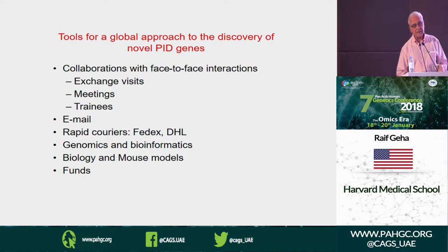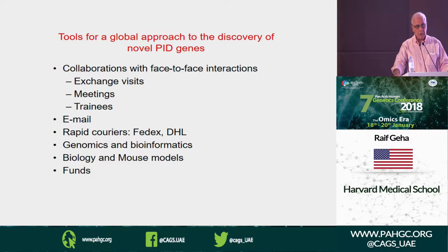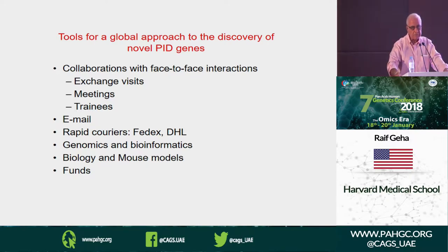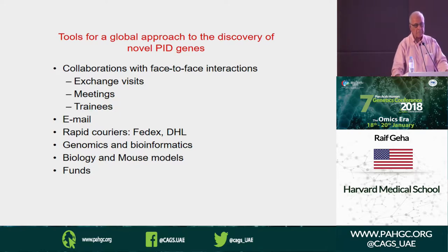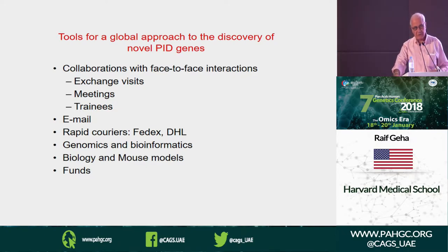This whole thing started about eight years ago. We had both a strength and a weakness at that time. The weakness was that I work in Boston. In Europe, there are guest workers from Algeria, Morocco, Turkey who intermarry with first cousins, making gene discovery easier for European immunologists. For us it was very difficult — particularly if we follow Mr. Trump, we will only get Norwegians.